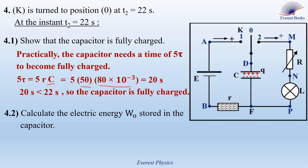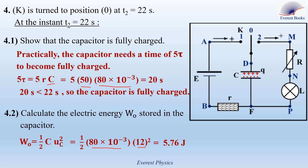Calculate the electric energy W0 stored in the capacitor. The electric energy stored is given by the formula: W0 equals one-half C Uc squared. At instant T2 equal to 22 seconds, the capacitor is fully charged, so UC equals E equals 12 volts, and C equals 80 times 10 to the power minus 3 farads. Therefore W0 equals 5.76 joules.